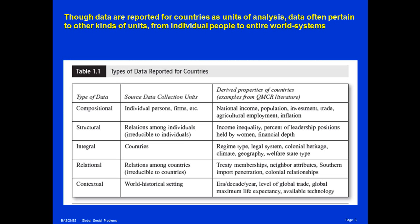Now, data are reported for countries in the international data infrastructure, but often they pertain to different kinds of unit of analysis. They are, in one way or another, aggregated to the country level. For example, some international data are purely compositional. They're data for persons or for firms, and they're just added up to compile data for the country. National income or gross domestic product is this sort of data. You simply find every person's income, every firm's income, add it all up, and you get the country's income.